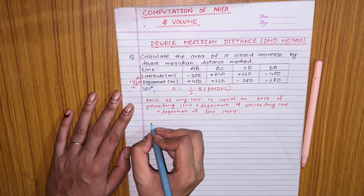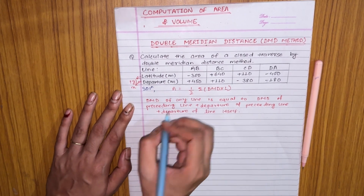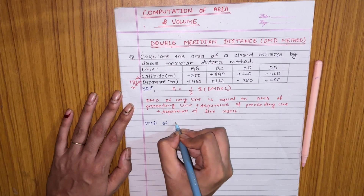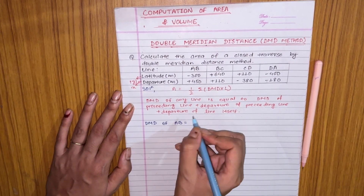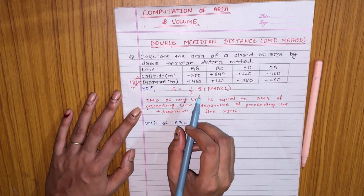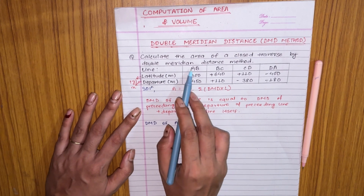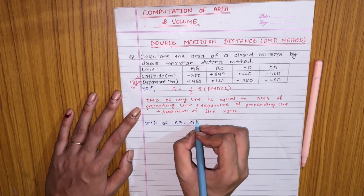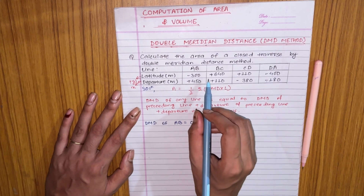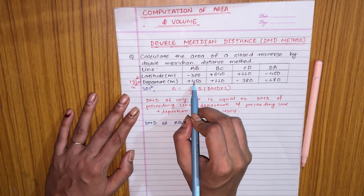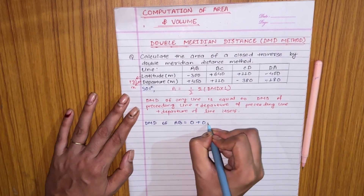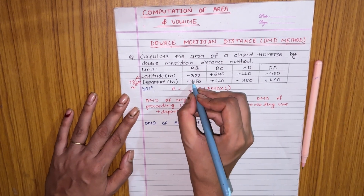Now for the solution: the DMD of line AB equals the DMD of the preceding line, which is zero since the starting point is A, plus the departure of the preceding line, which is also zero, plus the departure of line AB itself, which is 450. So the DMD of AB equals 450.